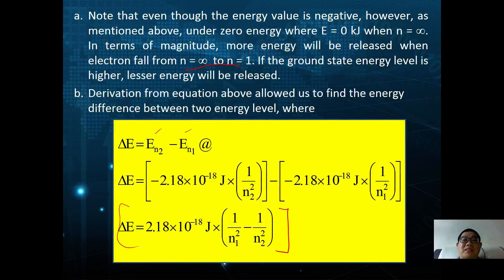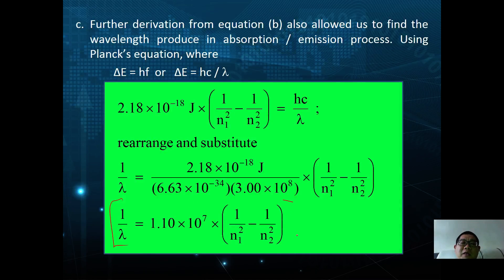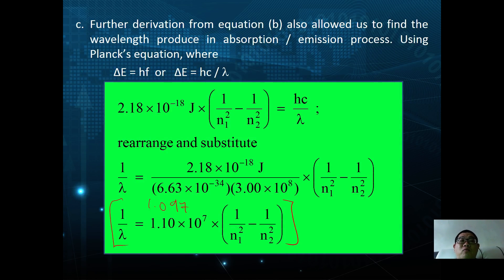The Bohr derivation also allows us to find the wavelength produced in absorption and emission processes. Using Planck's equation E = hf or E = hc/λ, we can relate back to the Rydberg equation derived earlier, where the constant 1.097 × 10⁷ m⁻¹ is recovered. This shows the relationship between the Bohr energy equation and the Rydberg equation.